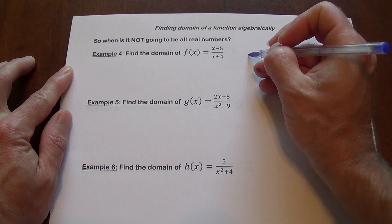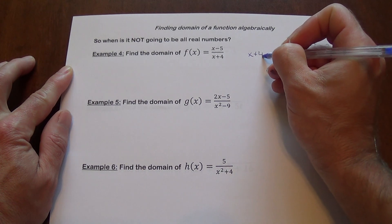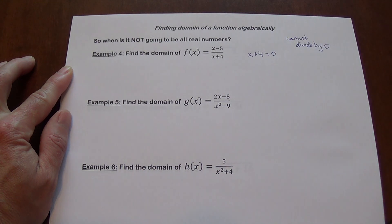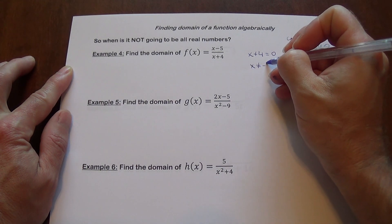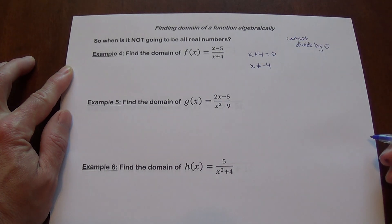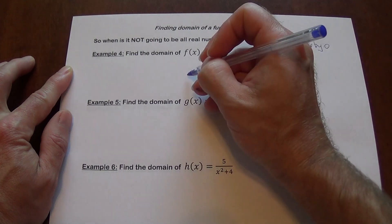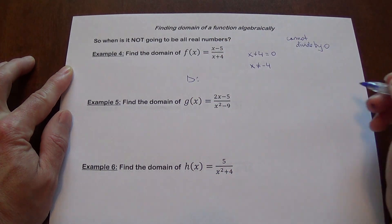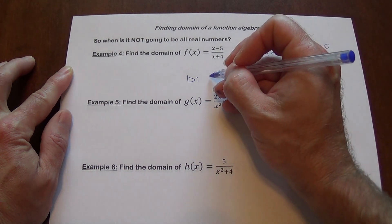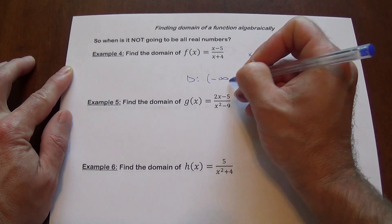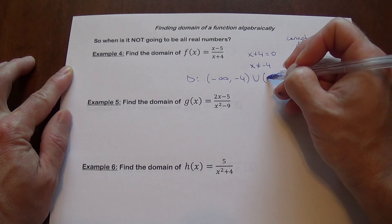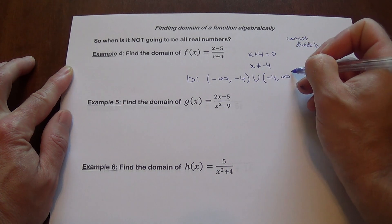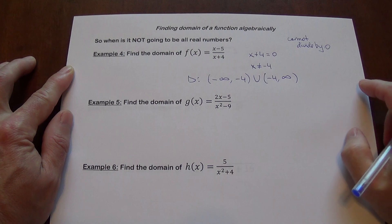So we can't make... If x plus 4 is going to equal zero, we're going to have a problem. That means x does not equal negative 4. We cannot allow for negative 4 to be used. So when we write the domain here, we're going to exclude negative 4. All the other values are good. So we're going to go from negative infinity to negative 4 open, and then union, and then go from negative 4 to infinity. So any value except negative 4 is good here.